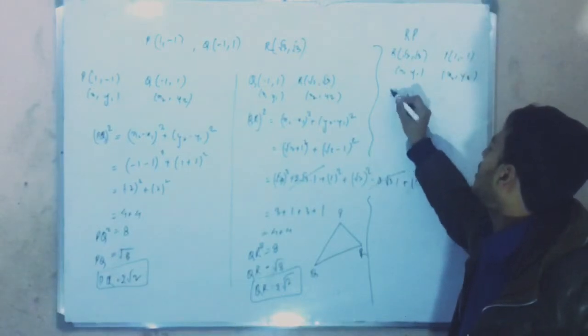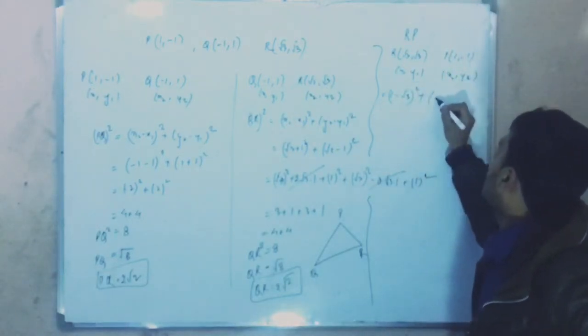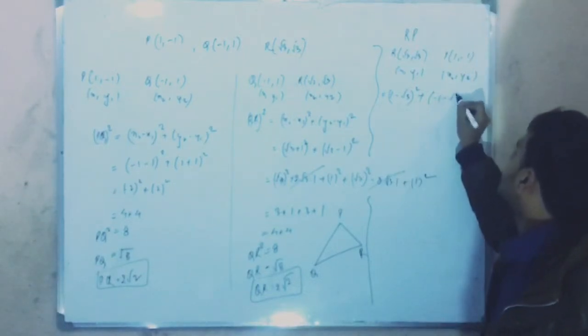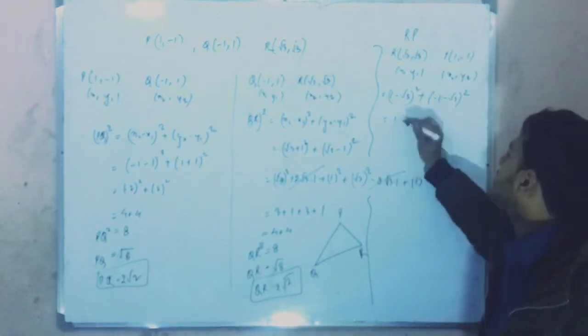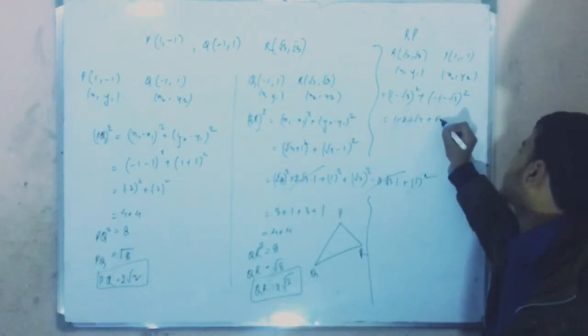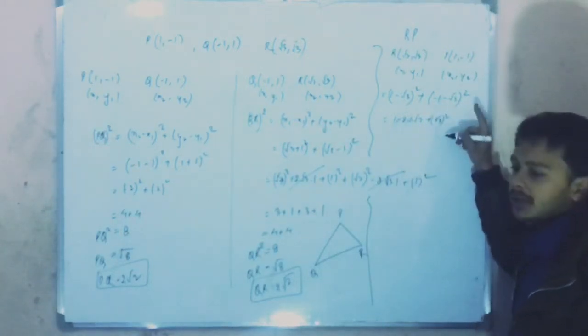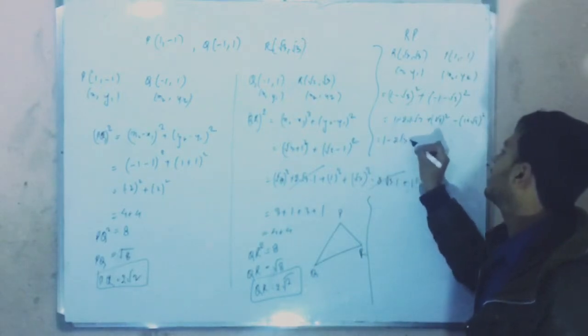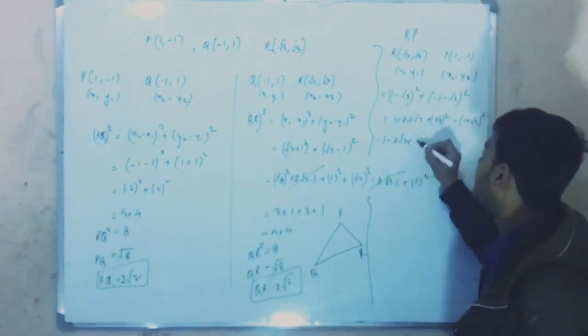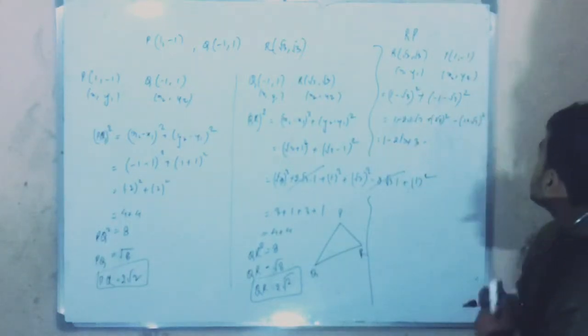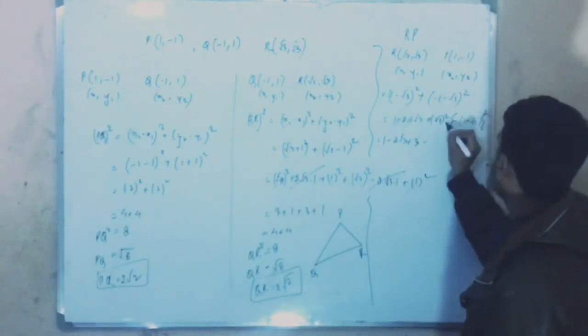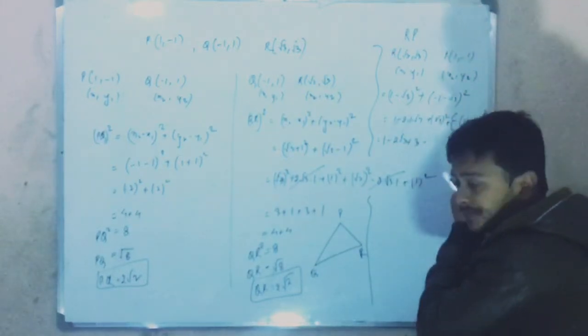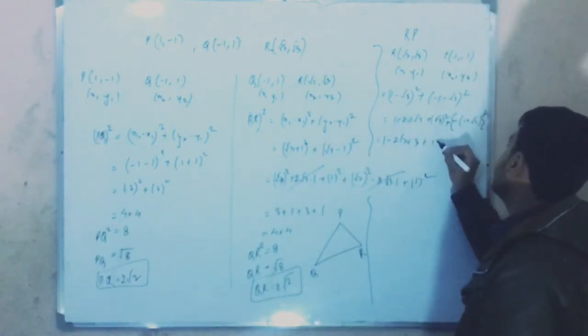This will be 1 minus root 3 squared plus minus 1 minus 3 squared. If I take minus as common, this is 1 plus 3 squared. Again, we get 1 squared minus 2 times 1 times root 3 plus root 3 squared, which is 1 minus 2 root 3 plus 3.